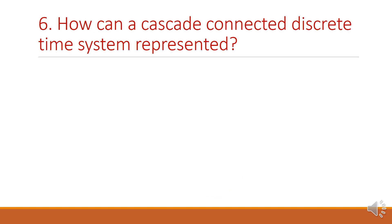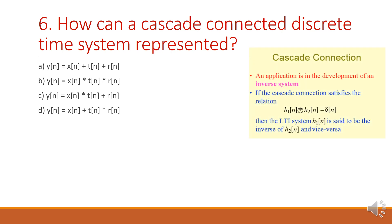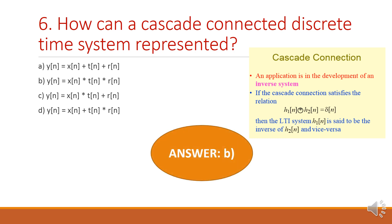Next question: how can a cascade connected discrete time system be represented? Cascade connection means we are connecting the systems in series manner. When the systems are connected in series, the output response will be the convolution of the system functions. Y of n equals X of n convolution with T of n convolution with R of n. Option B is the right answer. Always remember: when systems are connected in cascade, write the response in terms of convolution.